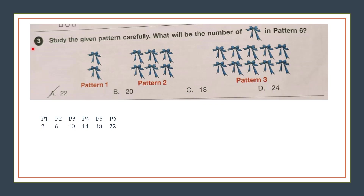Question number 3: Study the given pattern carefully. What will be the number of ribbons in pattern 6? Pattern 1 has 2, pattern 2 has 6, pattern 3 has 10. So we add 4 each time. Pattern 4 will have 14, pattern 5 will have 18, and pattern 6 will have 22 ribbons. Our answer is option A, 22.